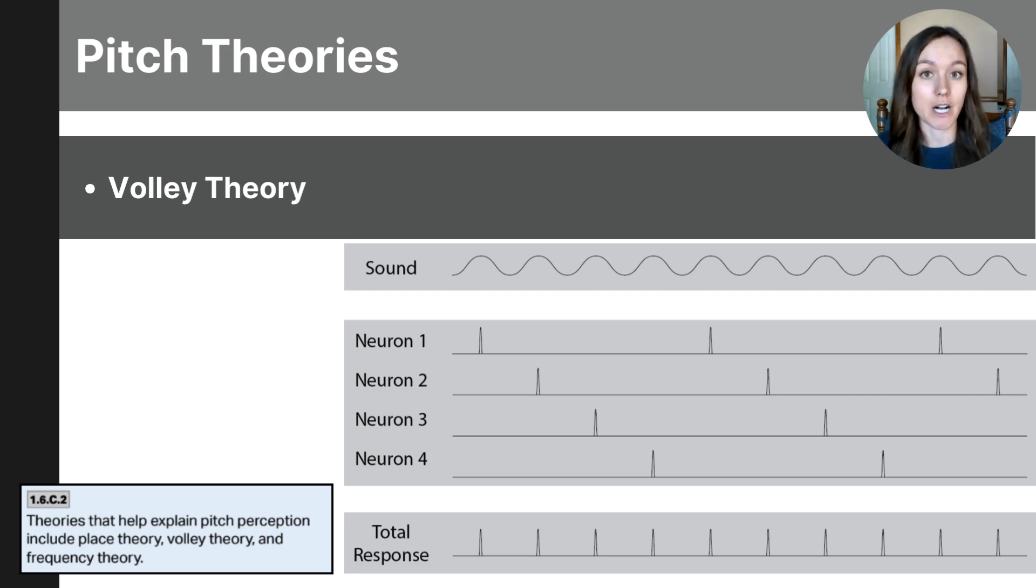The next pitch theory is the volley theory. The volley theory suggests that groups of neurons or nerve cells work together to send information about sound frequencies to the brain. So here's how it works. Think of it like a relay race where several neurons or several runners take turns passing the baton or the sound information. This theory is suggesting that a single neuron can't send signals fast enough for high-pitched sounds. So instead, multiple neurons take turns firing, creating a combined signal. So as you can see on the diagram on the screen, the rapid wave showing the high-pitched sound is replicated by four neurons alternating their firing so that they can send the signal fast enough to represent the high-pitched sound. This team effort allows the brain to interpret higher pitches that a single neuron itself could not handle. So to summarize, the volley theory is that groups of neurons work together to send higher frequency sound information.